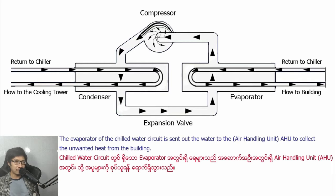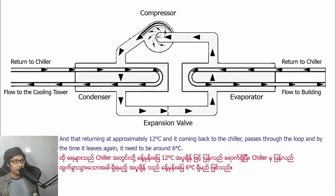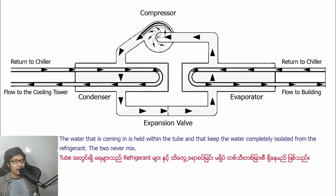The chilled water circuit from the evaporator sends water out to the air handling unit to collect the unwanted heat from the building, returning at approximately 12 degrees Celsius. It comes back to the chiller and by the time it leaves again it needs to be around 6 degrees Celsius. The water coming in passes through the tube and that keeps the water completely isolated from the refrigerant.